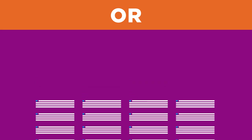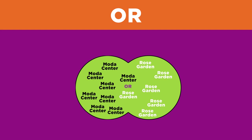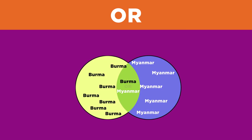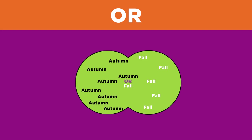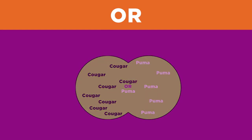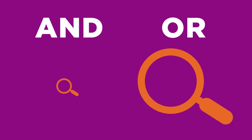Here are some examples. Maybe your topic has changed names over time — for example, names of sports stadiums may change with sponsorship. Or, did you know that the country Myanmar used to be called Burma? Search for both words to get the most results. Maybe your topic is known by two different terms: the season fall is also called autumn, and in some areas, a cougar is called a puma. So the operators AND and OR are basically opposites: AND narrows a search while OR broadens it.